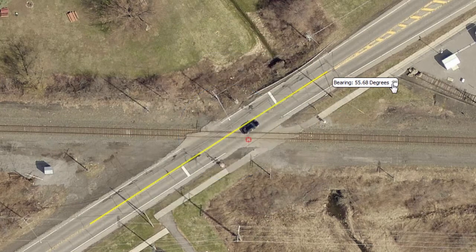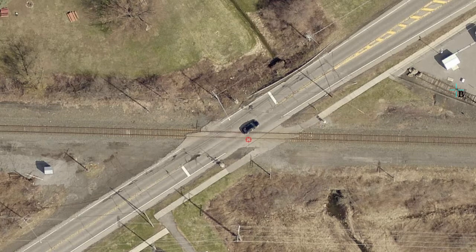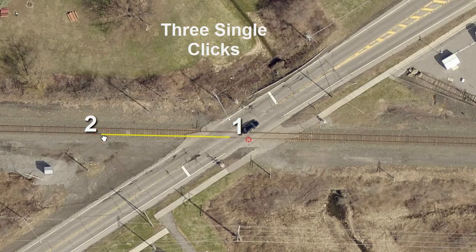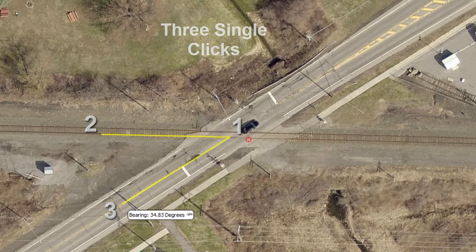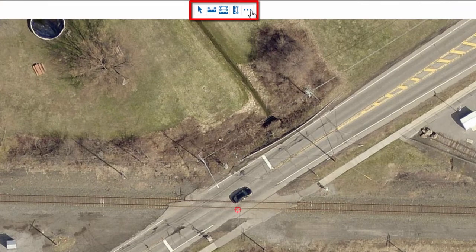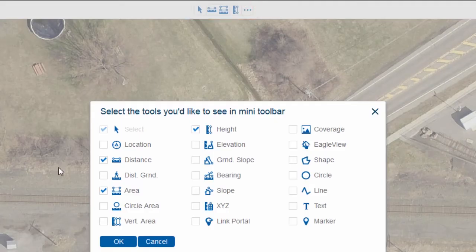You can also measure an angle using the Bearing tool. For example, to determine the angle of the intersection of a railroad track and a street, find the vertex of the angle you want to measure and click. Move the mouse along the first edge or ray of the angle and click a point to create a line. Finally, move the mouse to establish the other ray of the angle and click to finish your measurement. Remember, at any time you can add any of these tools to your customized toolbar by clicking the three dots along the top of your interface and selecting which tools you wish to have access to.